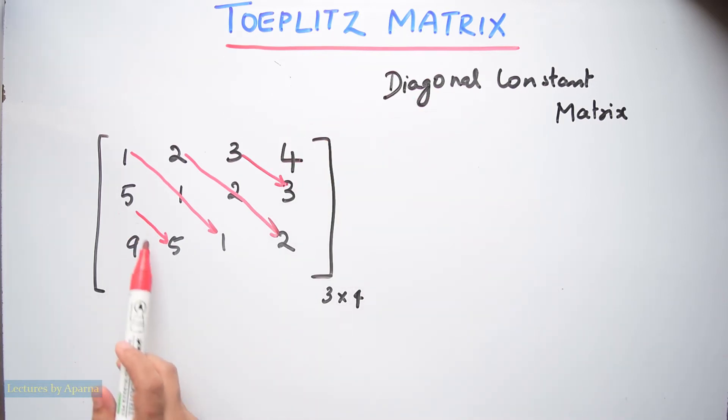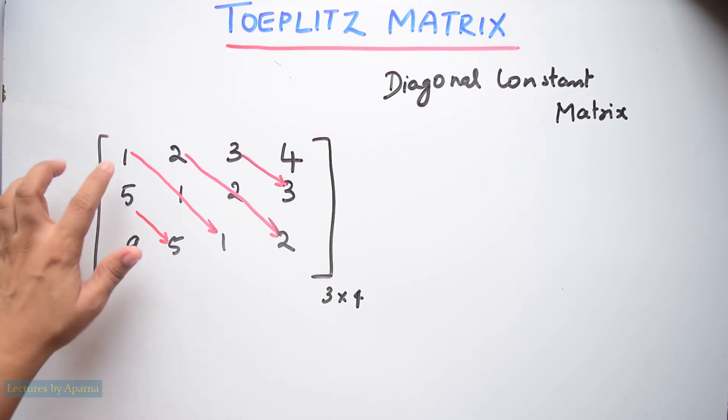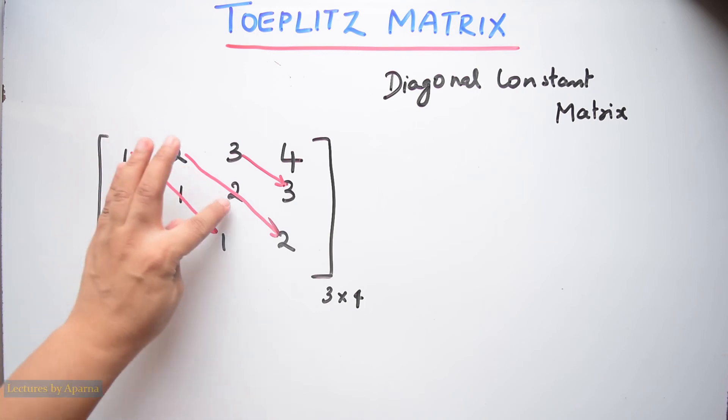Those elements coming in the descending diagonals will be constant. So here this 5 and this 5 will be same. Now in the next diagonal this 1, 1 and 1 will be same. In the next descending diagonal this 2, 2 and 2 will be same. So likewise.